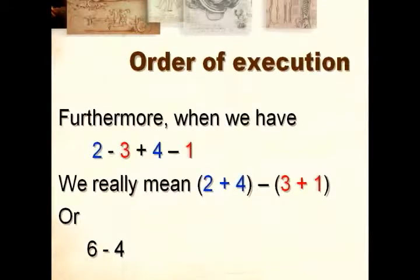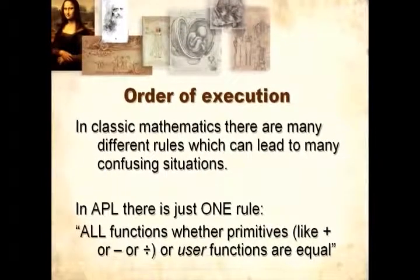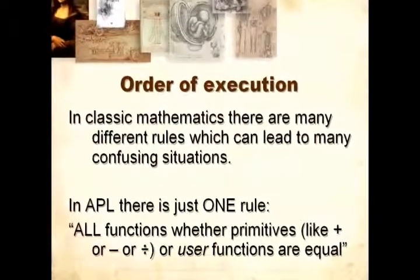Furthermore, when we have something like 2 minus 3 plus 4 minus 1, what we really mean is give me 2 plus 4, and then subtract 3 plus 1, or 6 minus 4. In classic mathematics, there are many different rules which can lead to many confusing situations.